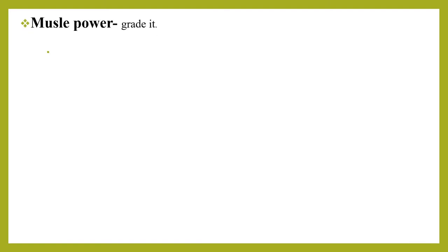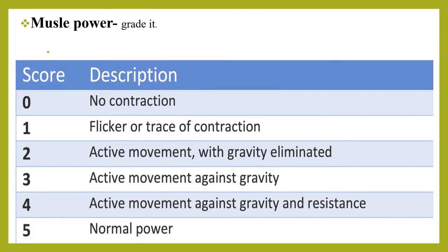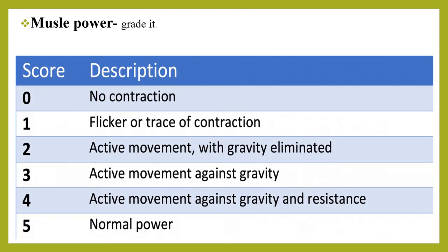Muscle power assesses the strength of muscles. Strength is graded from zero to five: grade 0 is no movement; grade 1 is only flickering movement; grade 2 is active movement with gravity eliminated; grade 3 is active movement against gravity; grade 4 is active movement against gravity with some resistance; grade 5 is movement against full resistance, or normal power.